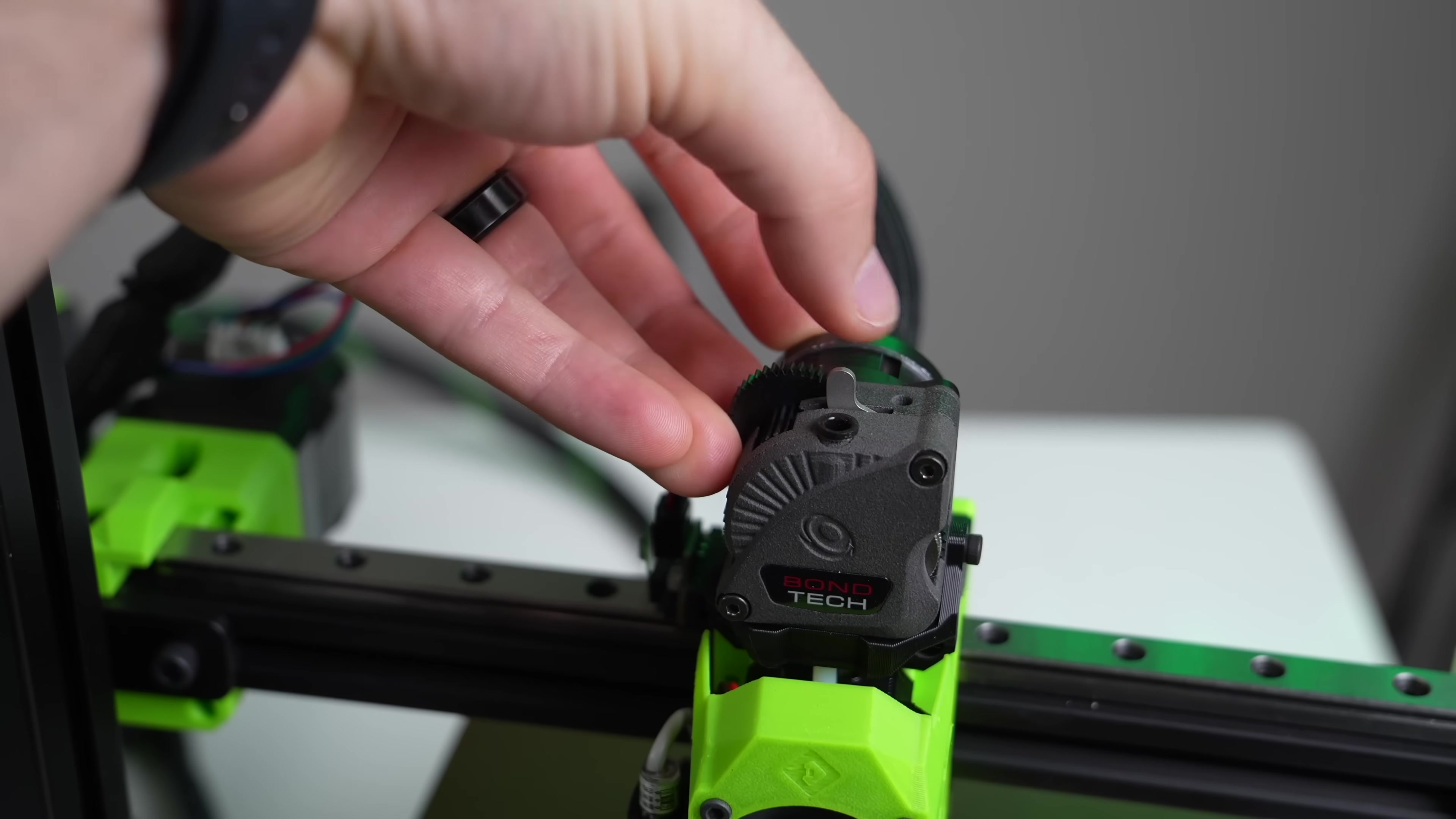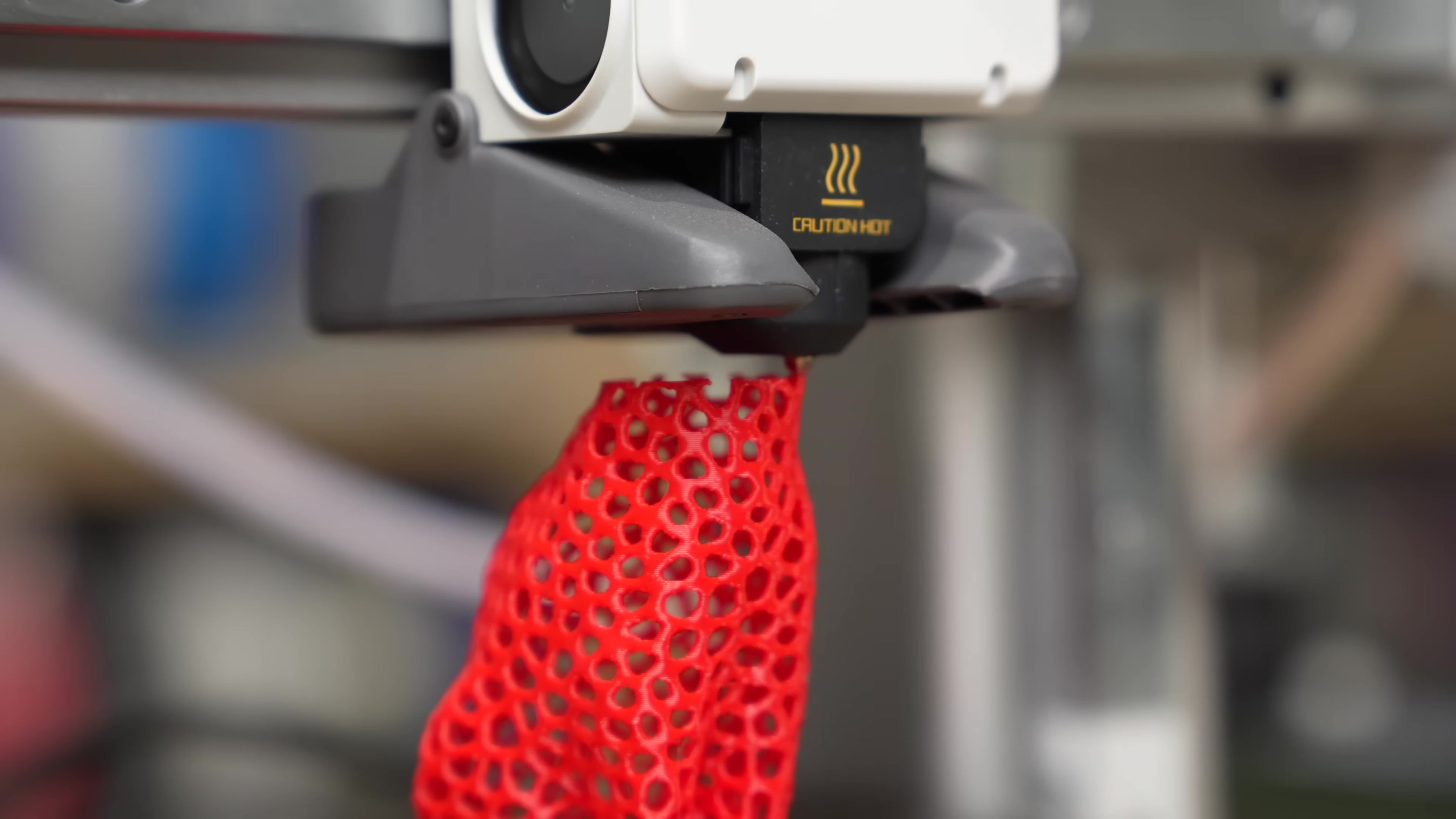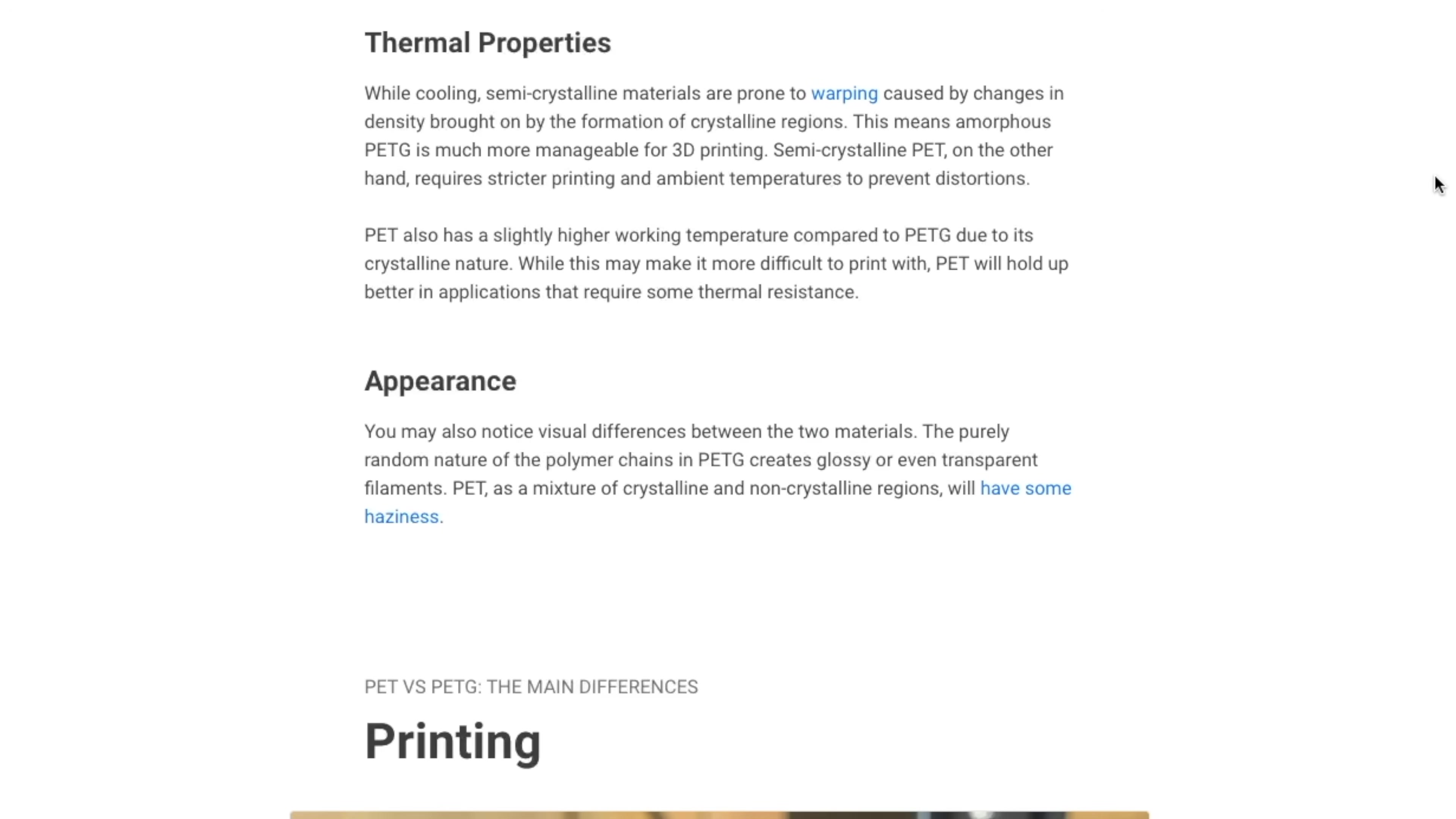In 3D printing, while it's certainly become more popular, largely due to advancements in 3D printers and their reliability, PETG, a glycol modified version of PET, is much more common. This difference impacts the material's overall properties, as well as its printing requirements.